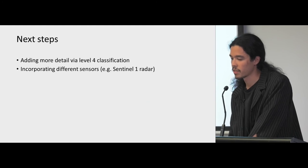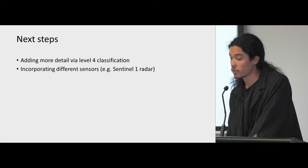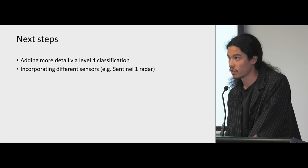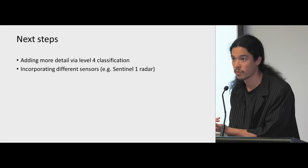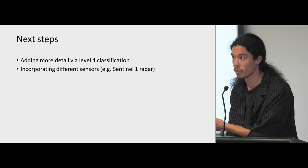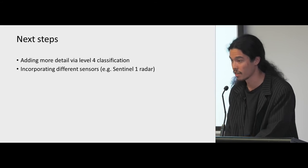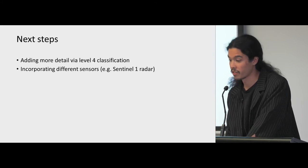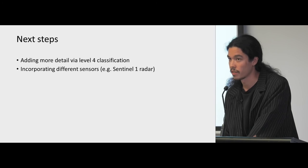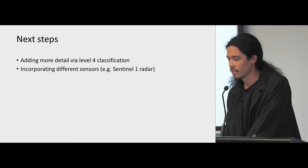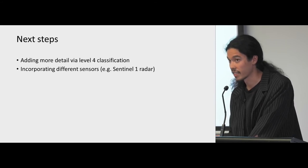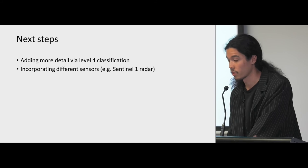The next steps are primarily adding more detail via level four classification — adding height and crop types, which are the detail that some people want but maybe not everyone needs — and incorporating different sensors, particularly Sentinel-1 and radar. I love using radar data because I don't have to think about clouds, and we all hate clouds. Those are the two primary next steps I'm going to be working on with the team.